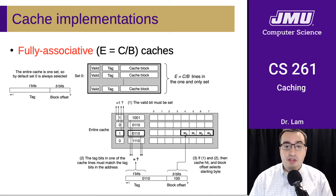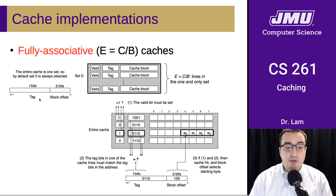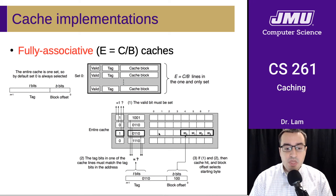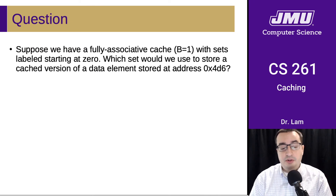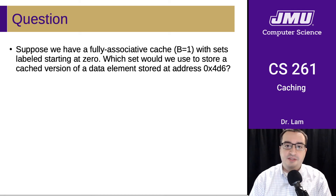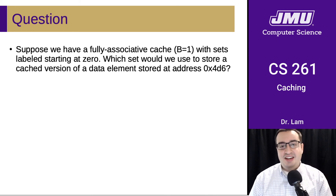The last type of cache is the fully associative cache. This is when everything is in one set, and so we're always going to select set 0, which means we don't need to reserve any bits for a set index. Basically, we just look through every single entry in the cache to check if the tag matches the tag from the address we're looking for. If it does, and if the valid bit is set, then we can read the data starting at the block offset. So suppose we have a fully associative cache with sets labeled starting at 0 — which set would we use? There's only one set, so we're always going to select set 0.